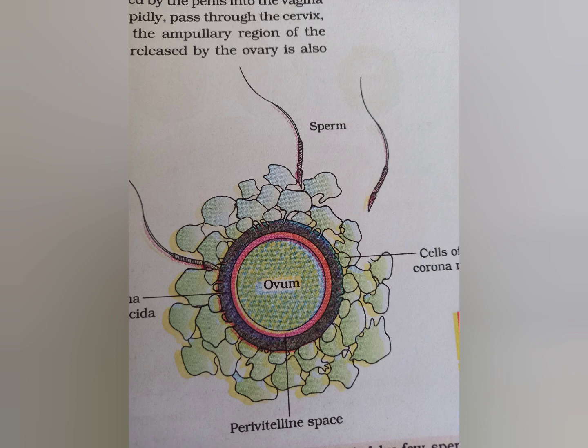The ovum released by the ovary is also referred to as ovulation, and this ovum is transported to the ampullary region where fertilization takes place. The fallopian tube is divided into three regions: isthmus, ampulla, and infundibulum. The ampullary region, which is the middle part of the fallopian tube, is where fertilization takes place. The ovum and sperm are transported simultaneously to the ampullary region.